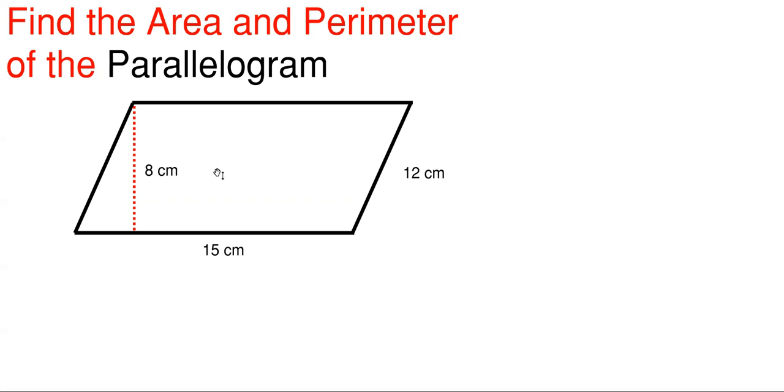So a parallelogram is just a four-sided shape that is made up of two sets of equal sides. A parallelogram is like a rectangle that has just been slanted in one direction. It's like taking the top of the rectangle and pushing it to the side.